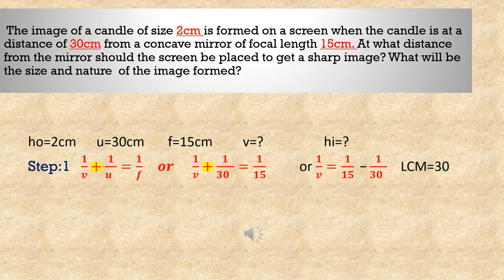We need to find: at what distance from the mirror should the screen be placed to get a sharp image — that means we have to find V. We also need to find the size and nature of the image formed, meaning we need HI. First, we find V using the mirror formula: 1/V + 1/U = 1/F.